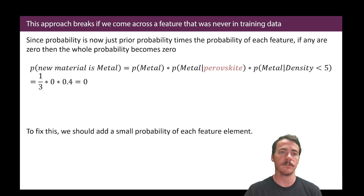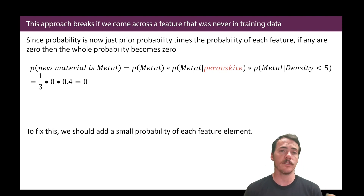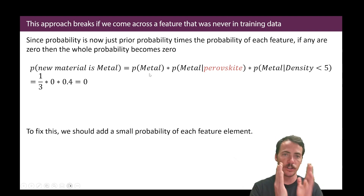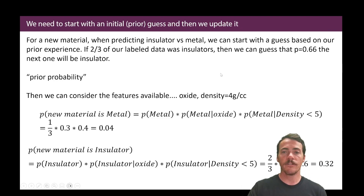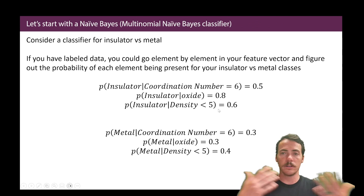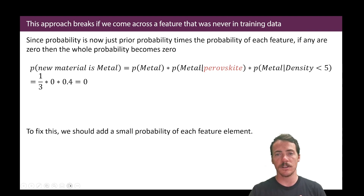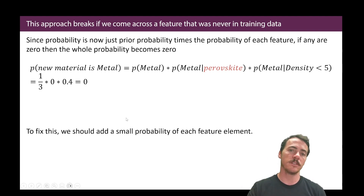There are some problems with this approach. For example, it would break if you came across a feature never present in the training data set. If you said you know it's a perovskite, and that was never in your training data, that conditional probability would go to zero, and since all terms are multiplied together, the entire expression goes to zero. To fix that, you typically add a very small probability to each feature element, even if it's something you haven't seen before, just to prevent going to zero.